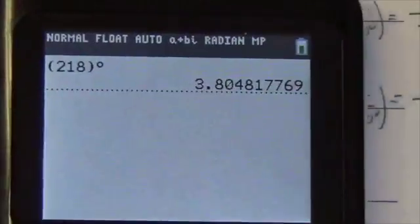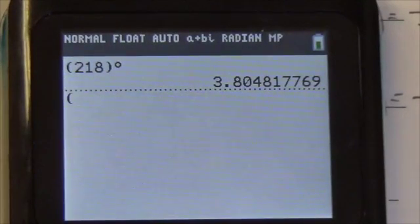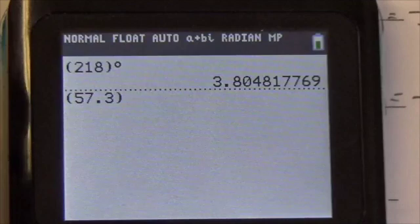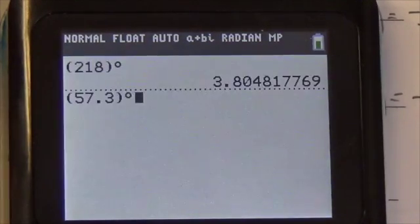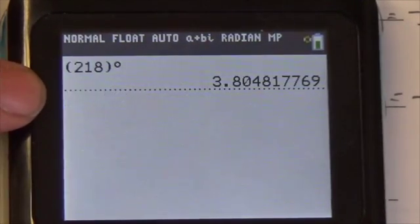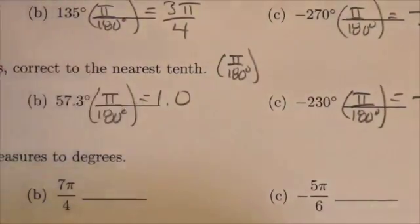Let's take a look at the next one. Okay, 57.3. Let's do the same thing. In brackets here, 57.3. And again, I go into my angle menu, and I will identify that that is a degree measure. Press enter. And I get 1.